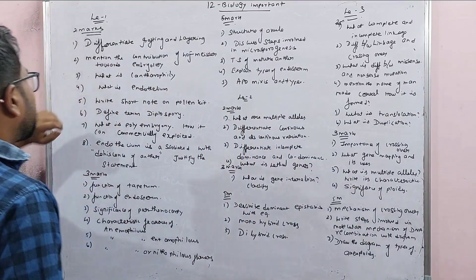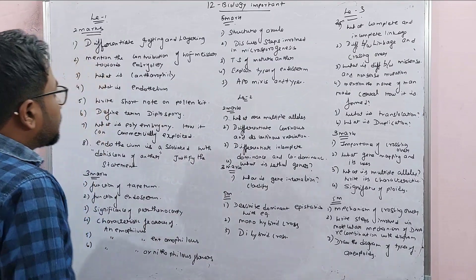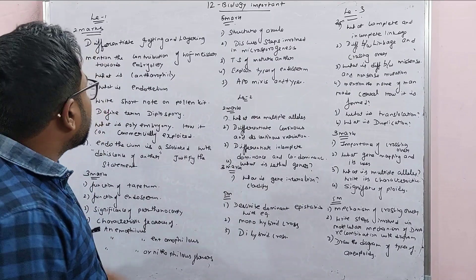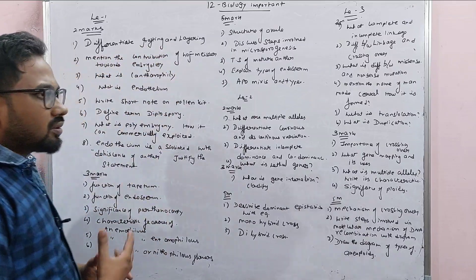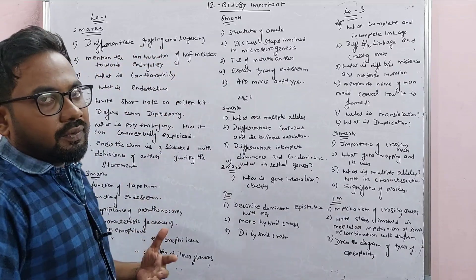Let's see the final question. 2 Mark Lesson 1, Asexual Reproduction. Very important lesson, that's why you have 20 marks.